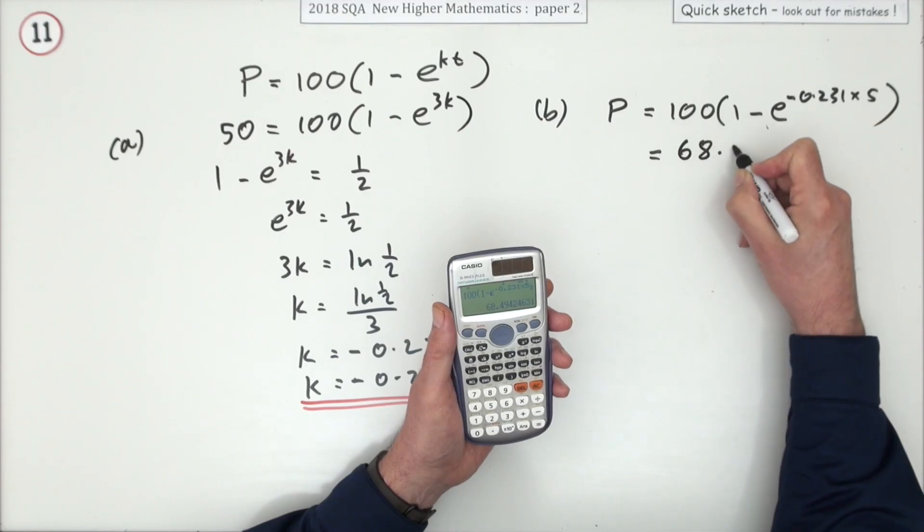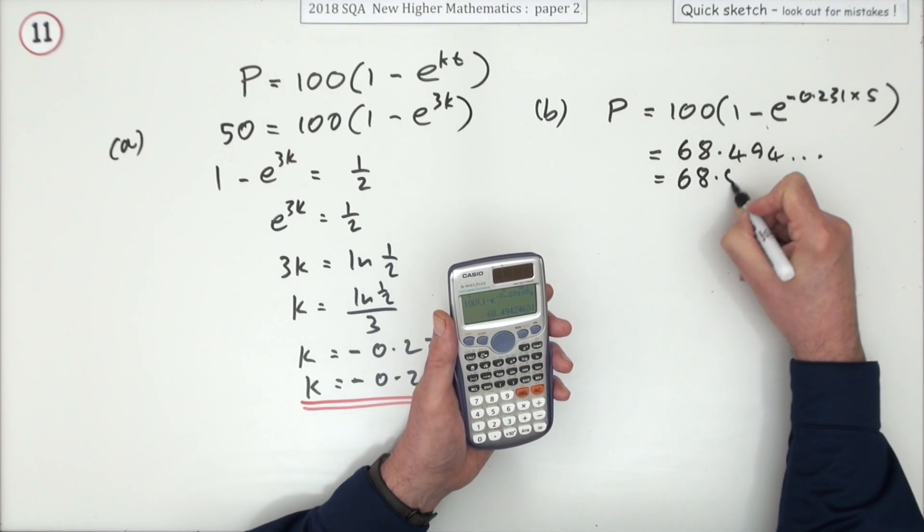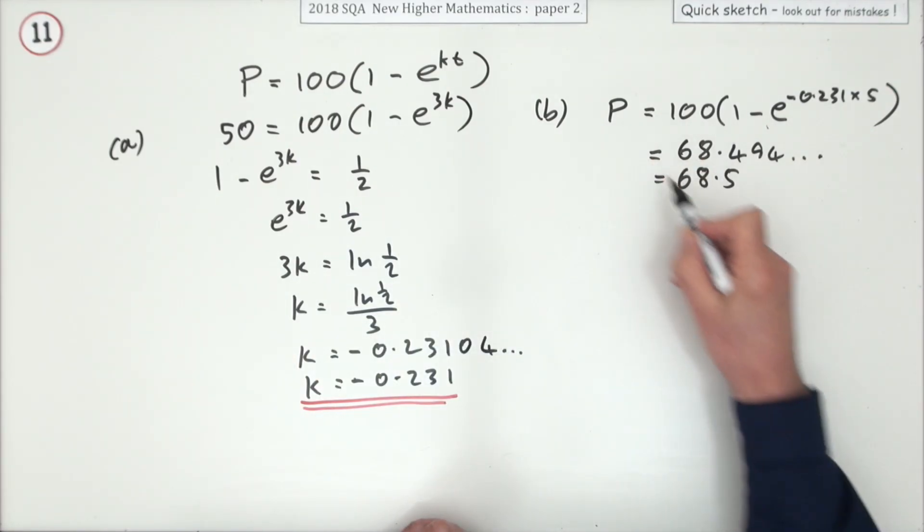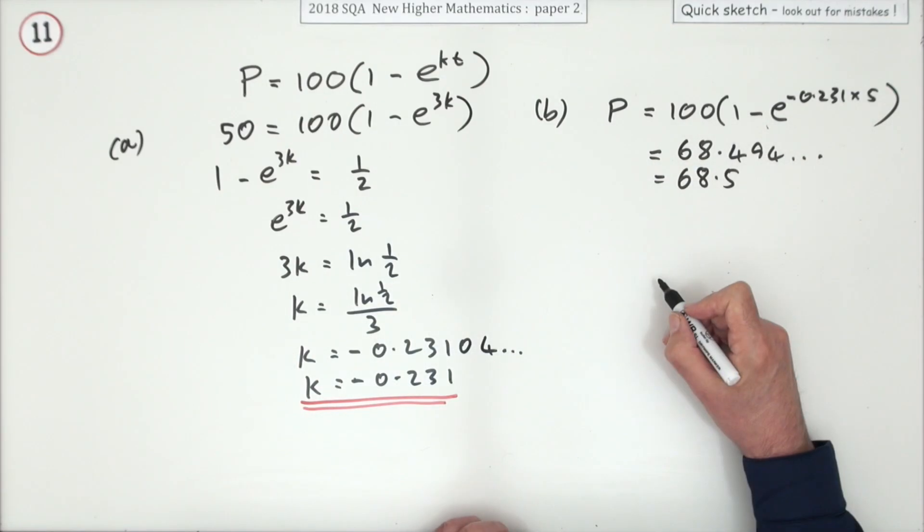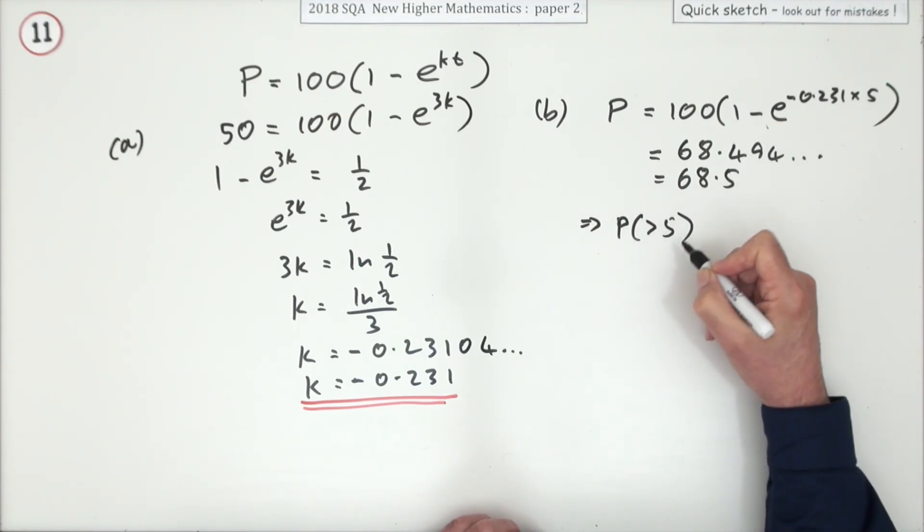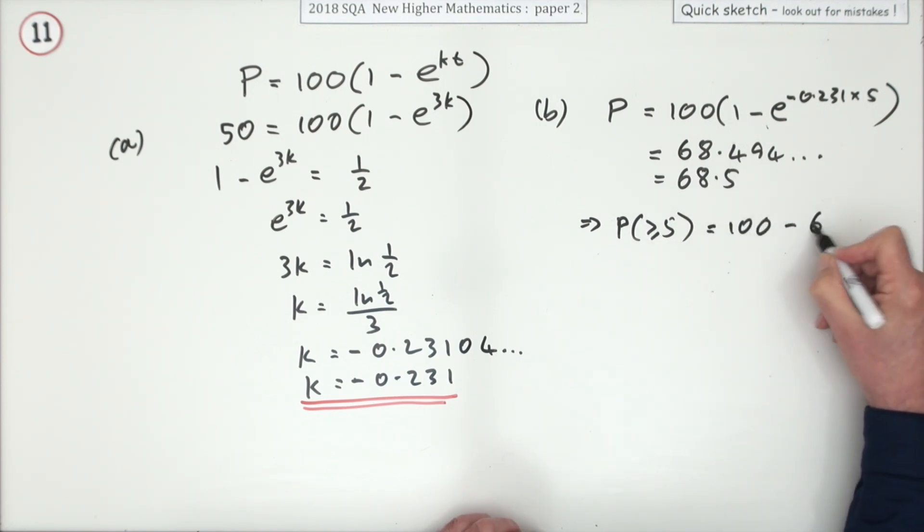So I think I'll call that 68.5%. Remember that represents the percentage that wait for less than five minutes, which means that the percentage you want - for more than or equal to five minutes - will be 100 minus that.